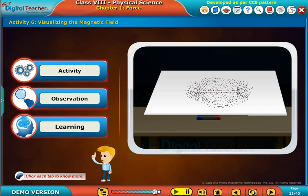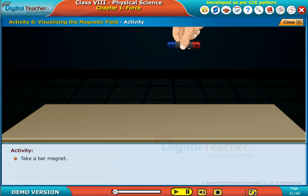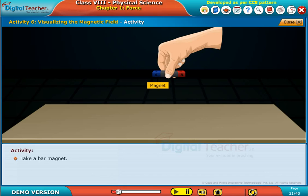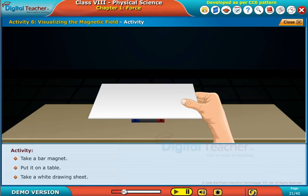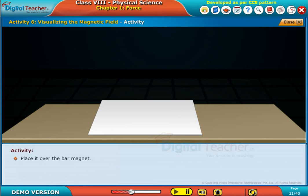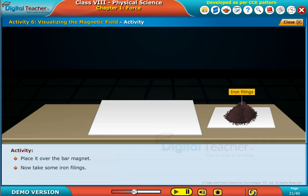Click each tab to know more. Take a bar magnet, put it on a table, take a white drawing sheet, and place it over the bar magnet.